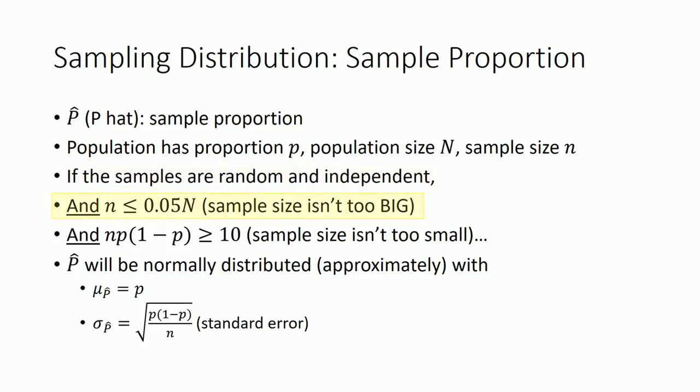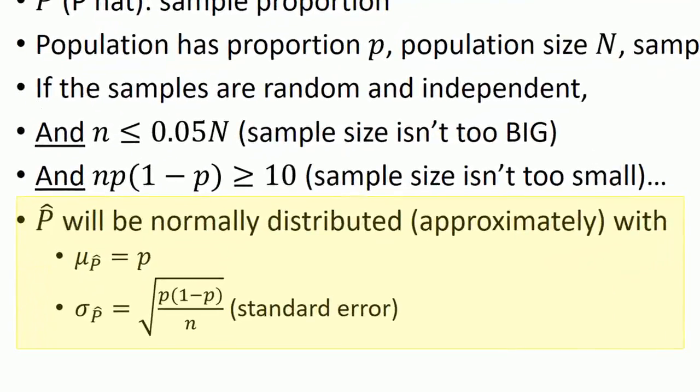The second requirement is that the sample size isn't too big, so no more than 5% of the population, and we check that by calculating if little n is smaller than or equal to 0.05 times big N. That's 5% of the population. And also, we need to make sure that the sample size isn't too small. And the check for that is N times p times 1 minus p, and make sure that's greater than or equal to 10.